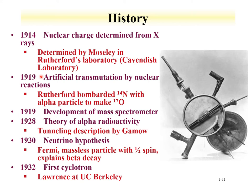In 1919, artificial transmutation by nuclear reactions was observed — Rutherford bombarded nitrogen-14 with an alpha particle to make oxygen-17. The nitrogen-14 came from the atmosphere and the alpha particle was from a radioactive source, demonstrating that nuclear reactions could occur. Also in 1919, the mass spectrometer had its first development. You can see that Rutherford's lab was producing a great deal of important research and great researchers.